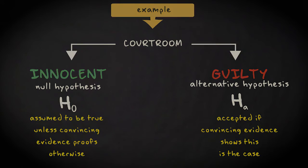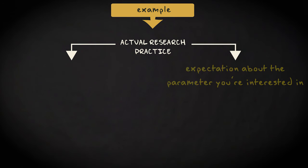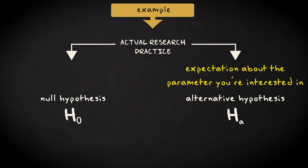Let me give you an example. In the actual research practice, your expectation about the parameter you're interested in forms your alternative hypothesis. The null hypothesis then is the opposite. But it has to be a single value, not a range of values.